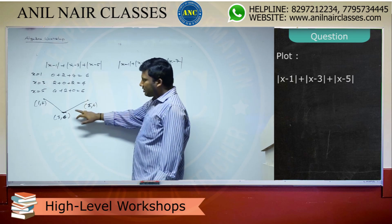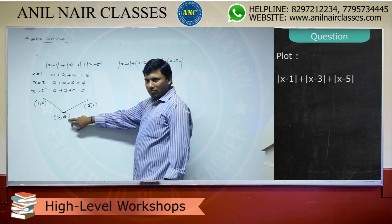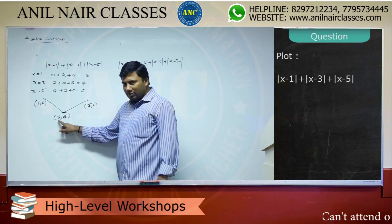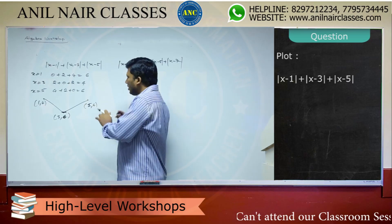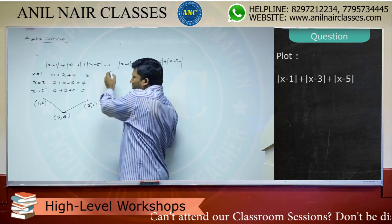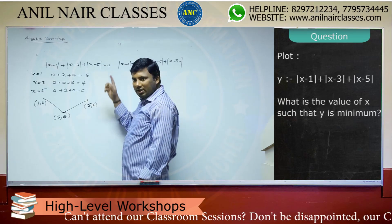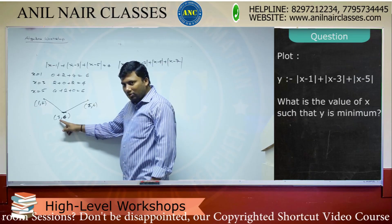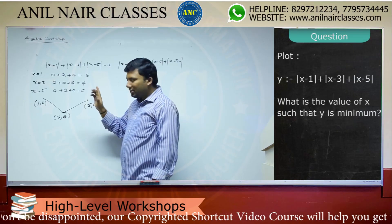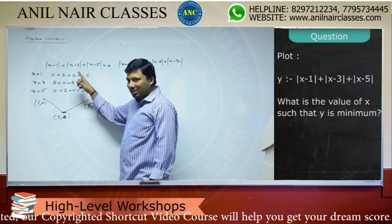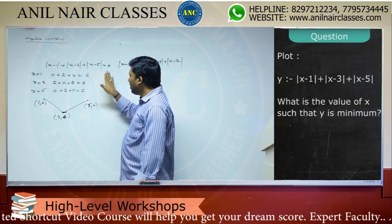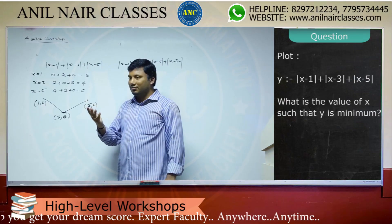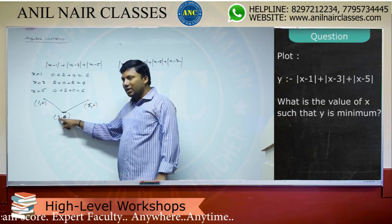What is the minimum value for this expression? It is 4, achieved at x equals 3. If this equation equals 4, how many values can x take? Only one value — x equals 3. So if the number of modulus functions added are odd, I will get a unique value for x.